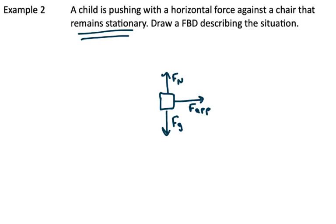And because this chair is sliding or trying to be slid by the child, there will be friction acting on it. The keyword of remaining stationary means that the frictional force will be the same as the applied force. So to show that we try to make the arrows the same length to show that it's an equal force.